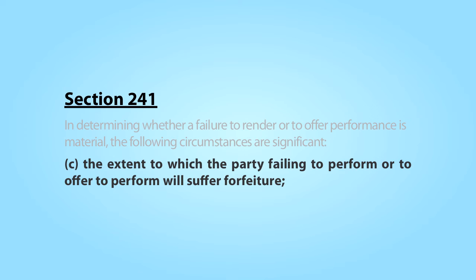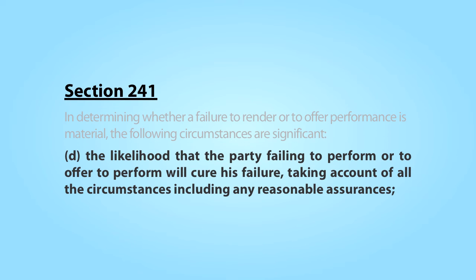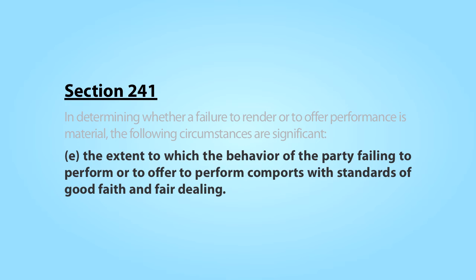Subpart C balances the loss to the non-breaching party resulting from the failure compared to the forfeiture the breaching party will suffer if the non-breaching party is allowed to walk away from the contract. Subpart D says that a breach is less likely to be deemed material if, under the circumstances, it appears that the other party is likely to cure the failure. Finally, in determining whether a breach is material, Subpart E takes account of whether the actions and assurances of the breaching party comport with standards of good faith and fair dealing. This provision is directly applicable to the Sackett v. Spindler case in our textbook, where the breaching party kept giving empty assurances that he intended to cure his failure to close on the deal to purchase the newspaper.